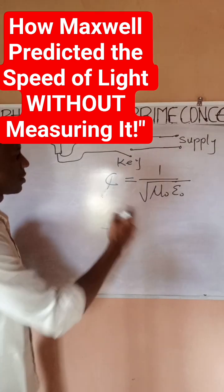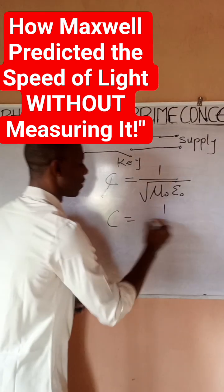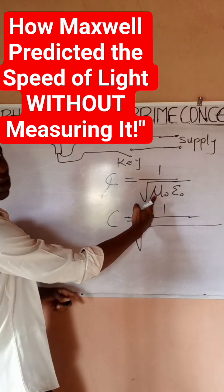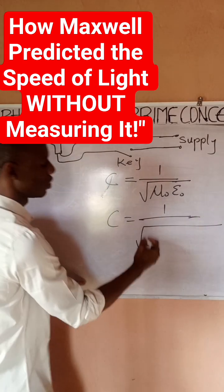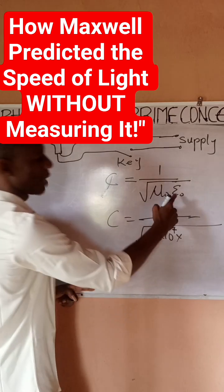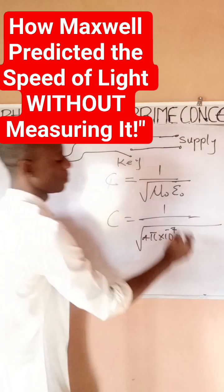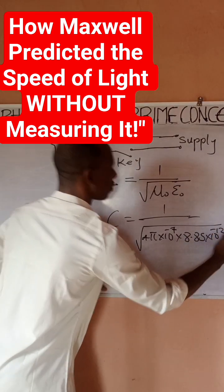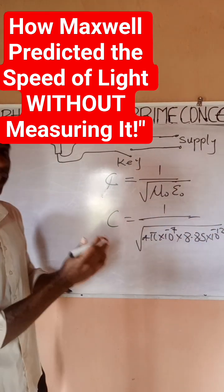So we know the values of these quantities, right? Mu naught is permeability of free space, which we know to be 4π times 10 to power minus 7. Epsilon naught is permittivity of free space, which is 8.85 times 10 to power minus 12.